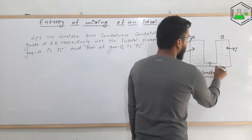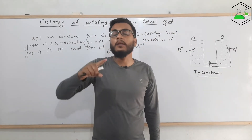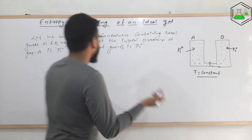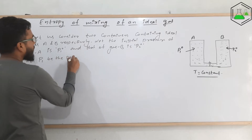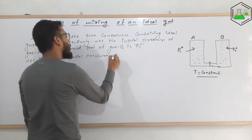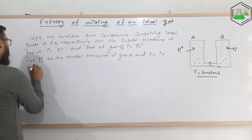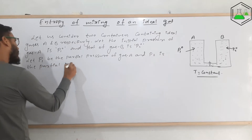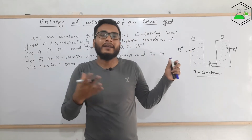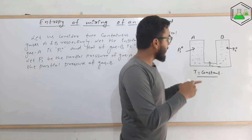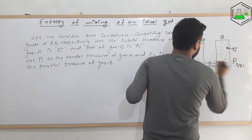Now suppose the stopper is opened and these two gases are allowed to mix with each other. Obviously they will mix and their pressures will change. Whatever is the new pressure of ideal gas A and B will now be termed the partial pressure — the final pressure. Let p1 be the partial pressure of gas A and p2 be the partial pressure of gas B.